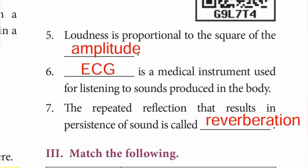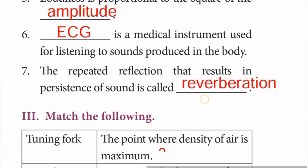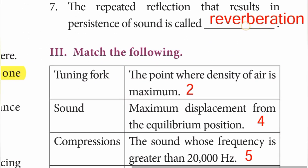Question 6: Dash is a medical instrument used for listening to sounds produced in the body — ECG. Question 7: The repeated reflection that results in persistence of sound is called reverberation.